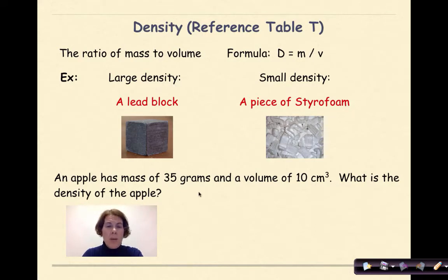Let's look at a density problem. An apple has a mass of 35 grams and a volume of 10 centimeters cubed. What is the density of the apple? The first thing that we're going to do is write out our formula. So density equals mass over volume. The mass of our apple is 35 grams. The volume of our apple is 10 centimeters cubed. So if I divide 35 by 10, I get 3.5 grams per centimeters cubed.